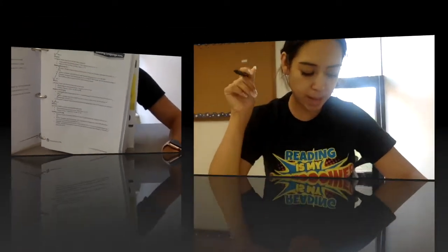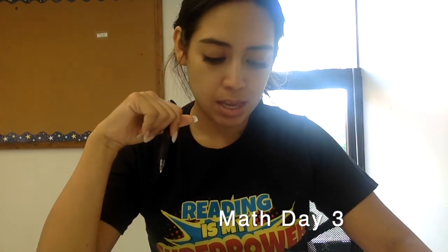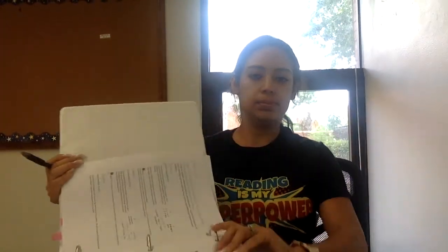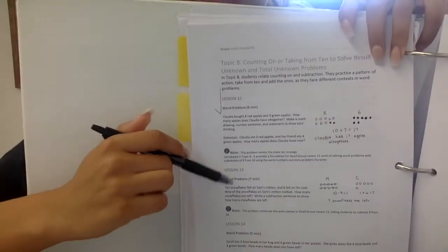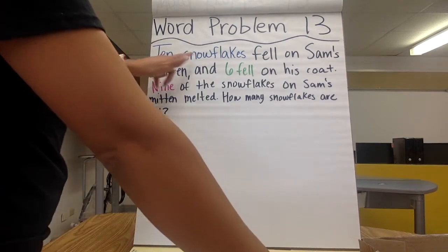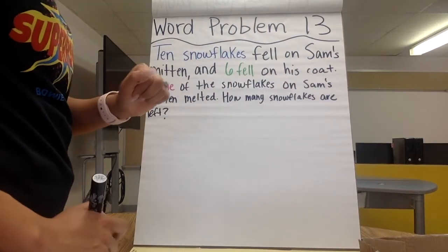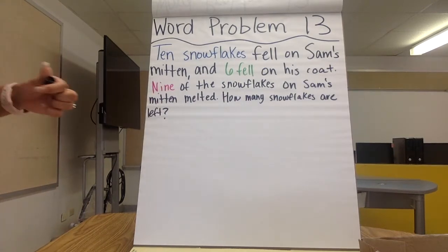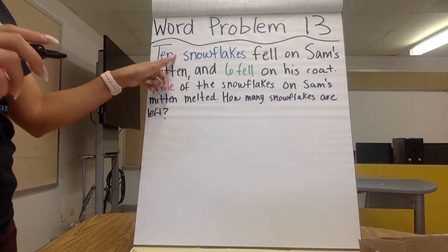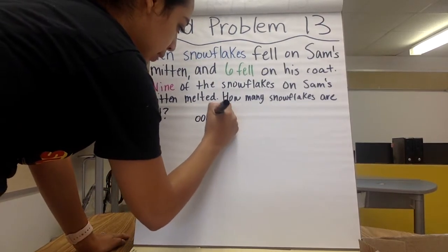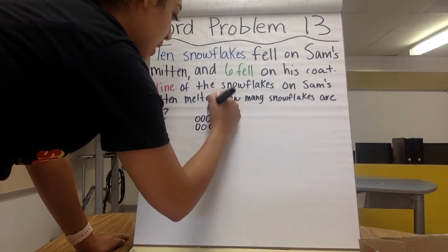I'm going to check off day three of week three. Stay tuned for math. We're going to do week three, day three — word problem, lesson 13. You will find that on page 182. Word problem 13: ten snowflakes fell on Sam's mitten, and six fell on his coat. Nine of the snowflakes on Sam's mitten melted. How many snowflakes are left? So I'm going to draw ten: one, two, three, four, five, six, seven, eight, nine, ten. This is from his mitten.